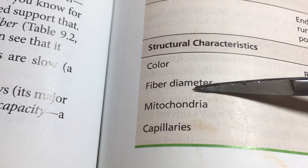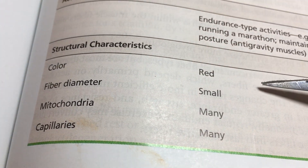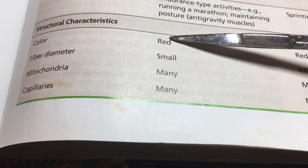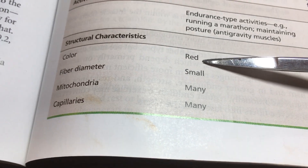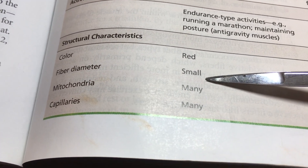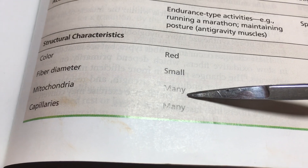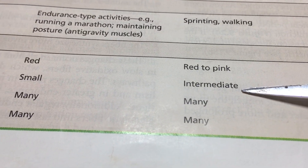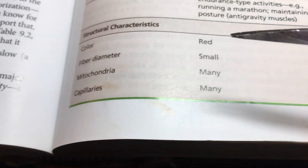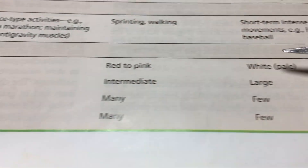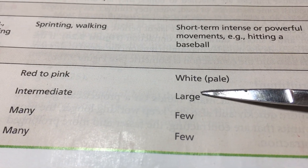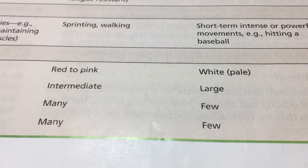In terms of color, fiber diameter, mitochondria, and capillaries: slow oxidative fibers have many capillaries and mitochondria, a small diameter, and appear very red. Fast oxidative fibers are intermediate — red to pink, with lots of capillaries and mitochondria. Fast glycolytic fibers have few capillaries and mitochondria, a very large hypertrophied diameter, and appear white.